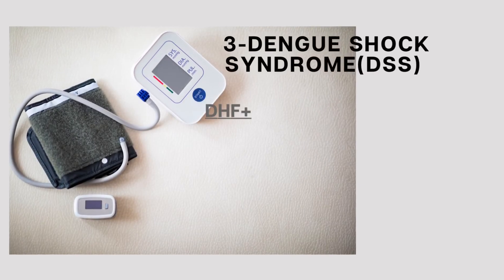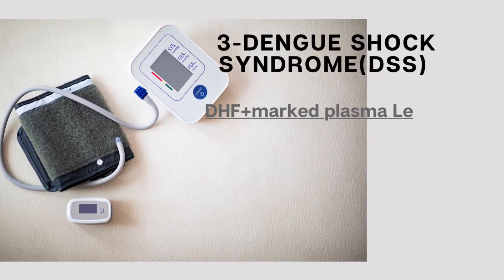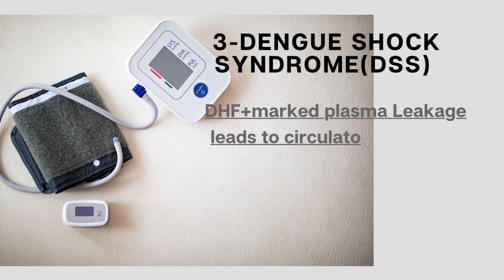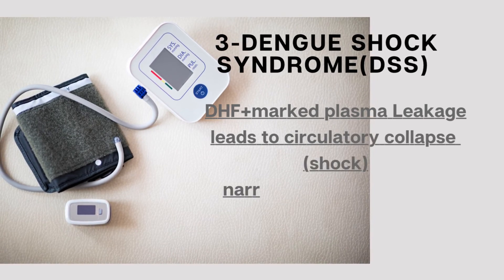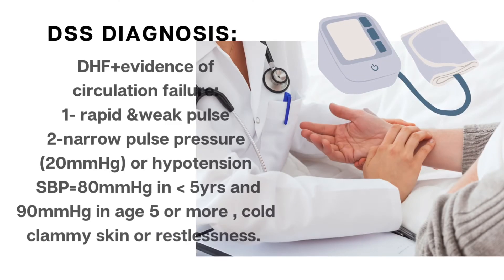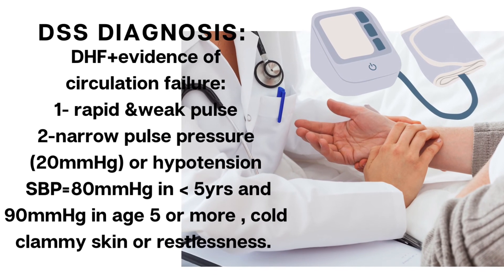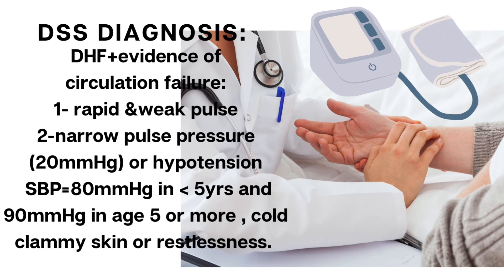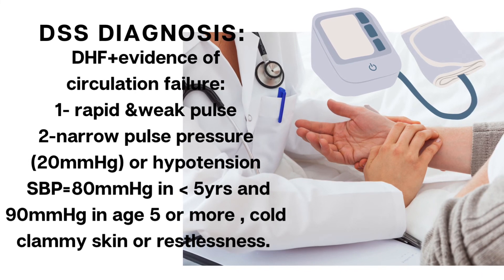Dengue shock syndrome, DSS, consists of dengue hemorrhagic fever with marked plasma leakage that leads to circulatory collapse or shock, as evidenced by narrowing pulse pressure or hypotension. For diagnosis of dengue shock syndrome, all four criteria for dengue hemorrhagic fever must be present, plus evidence of circulatory failure manifested by rapid and weak pulse and narrow pulse pressure of 20 mmHg or manifested by hypotension for age.